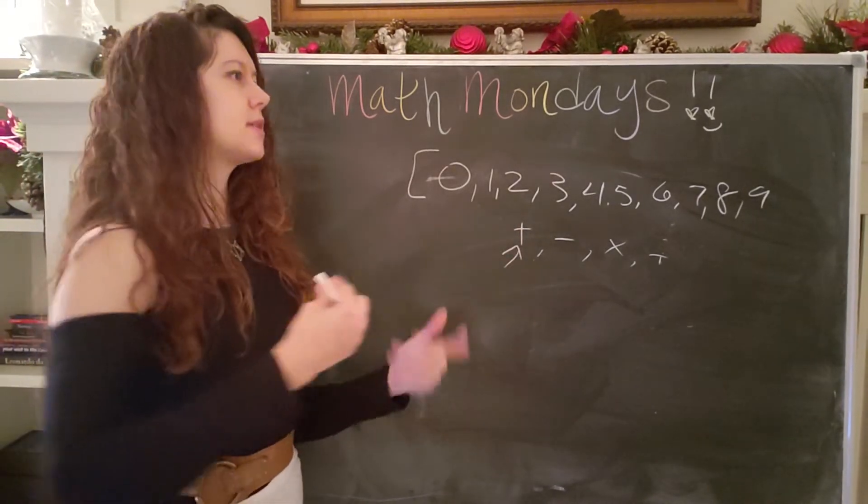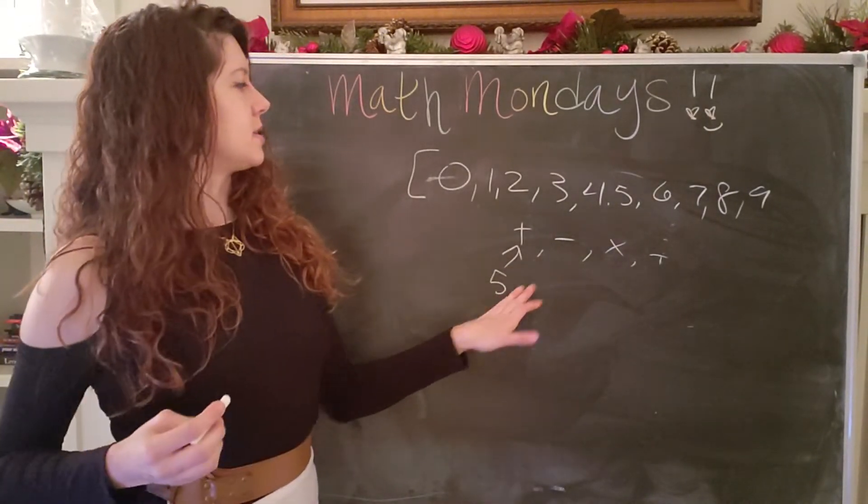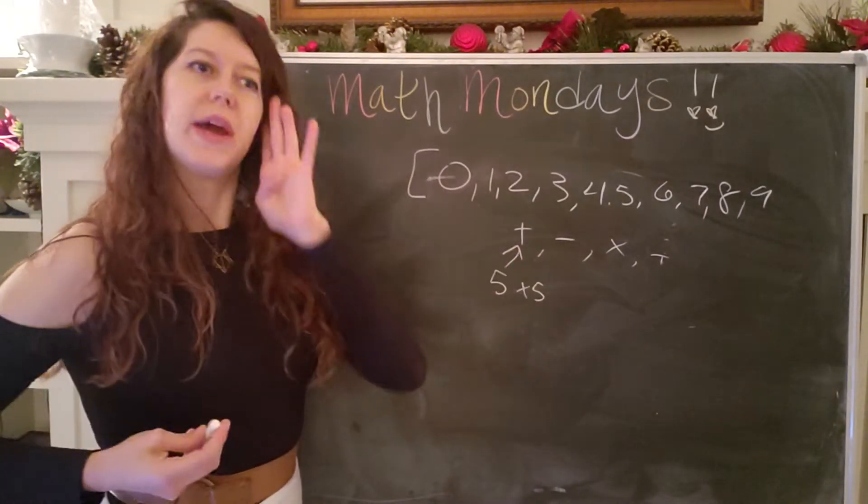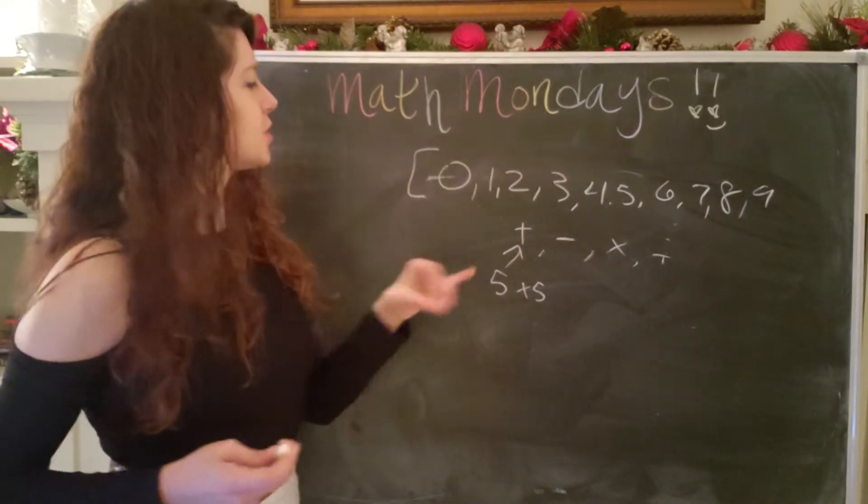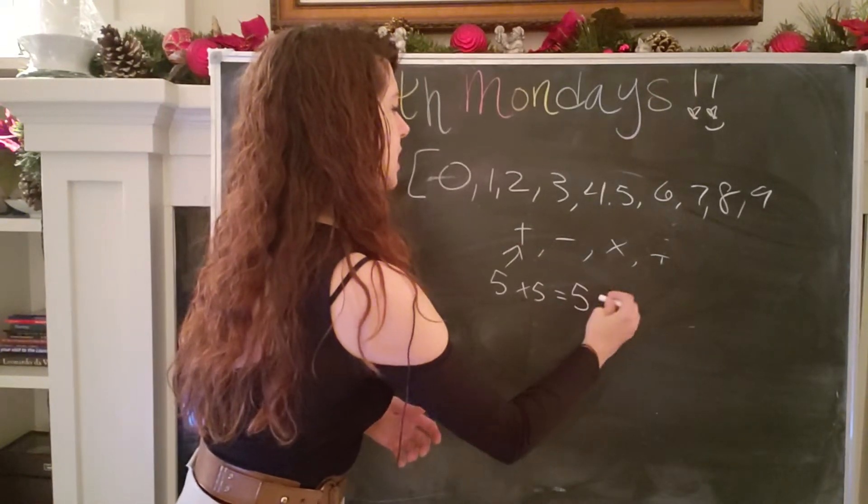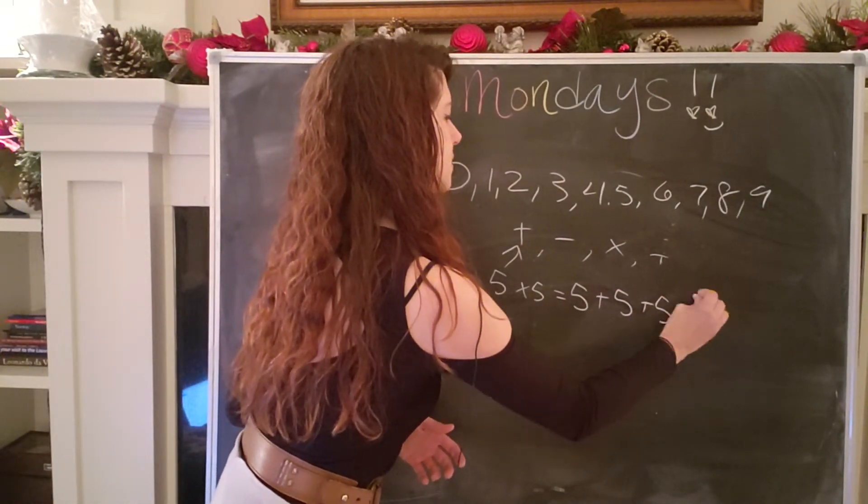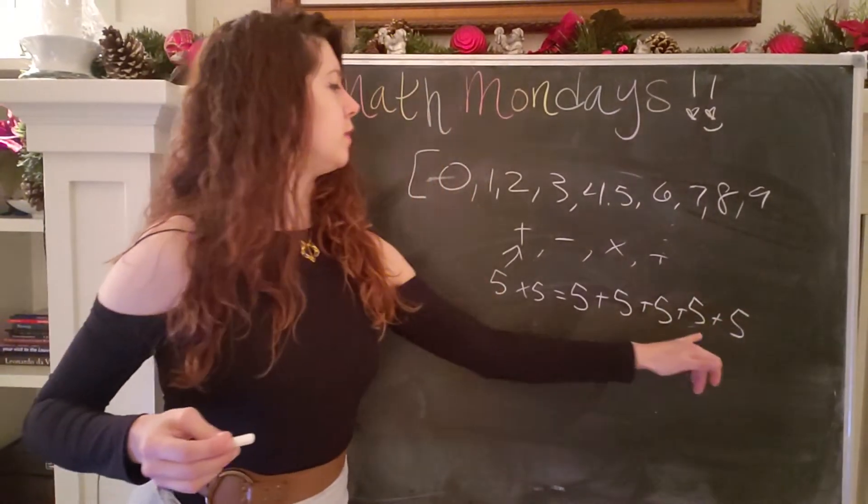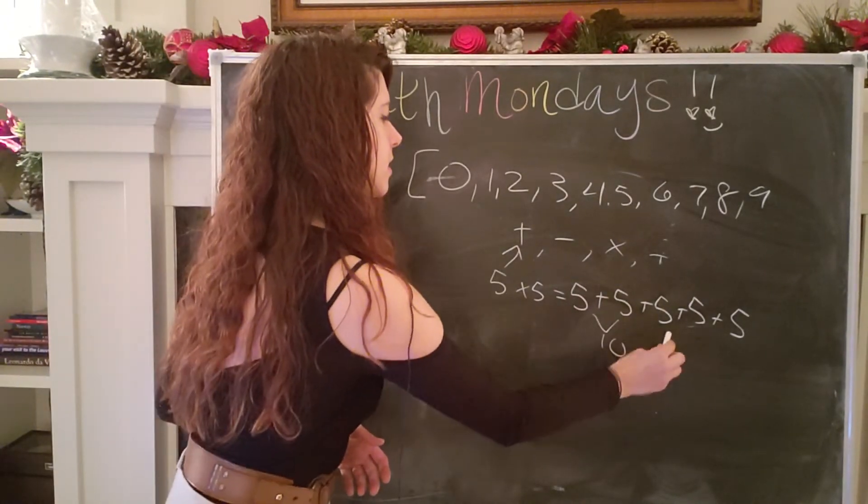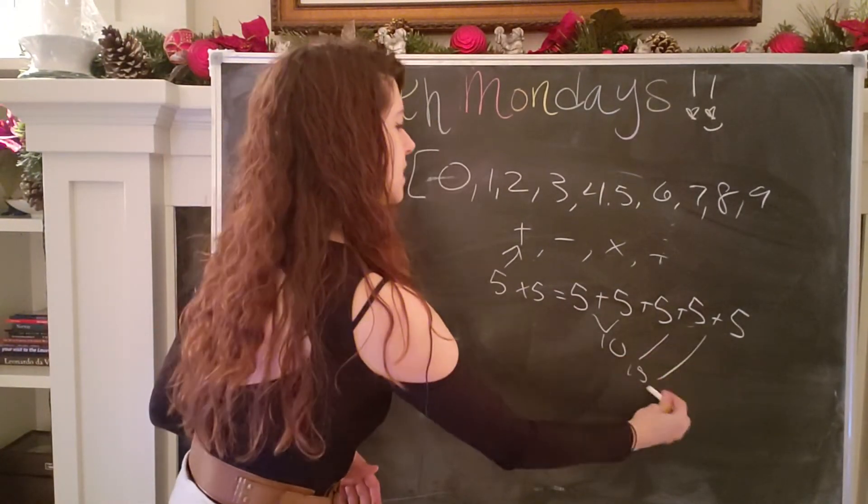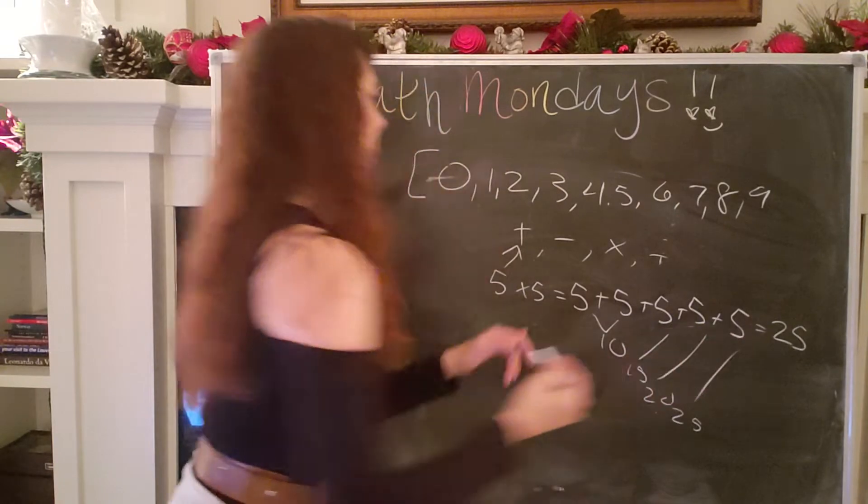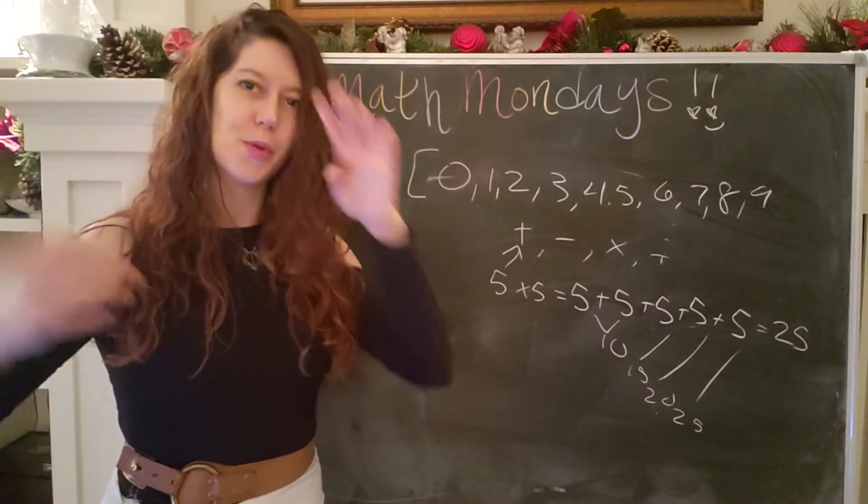And so if we were to say, okay, well, what is five times five? Really multiplication is just a way to make it easier for us to write five plus five, five times, or in other words, five plus five plus five plus five. So 1, 2, 3, 4, 5. We are adding five together five times. This is going to be 10, 10 plus five is 15, 15 plus five is 20 and 20 plus five is 25. And so now we have five times five equals 25. No big deal.